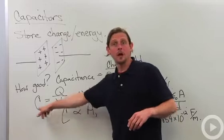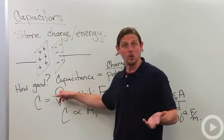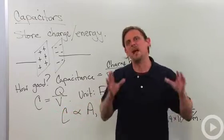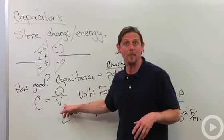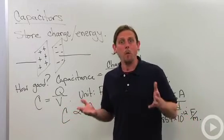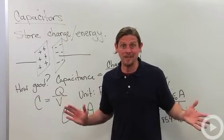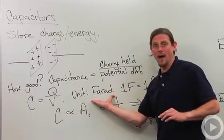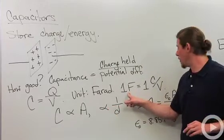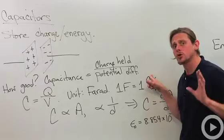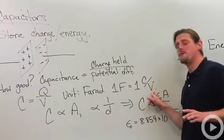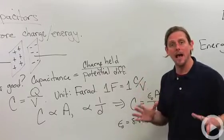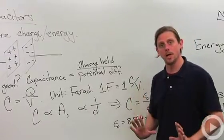That's the definition of capacitance. In symbols: C equals charge Q divided by the potential difference V. So what's the unit? In SI, we call it a farad. One farad is equal to one coulomb of charge stored per volt of potential difference across. Capacitance equals charge divided by potential difference.